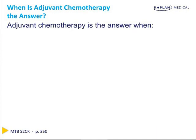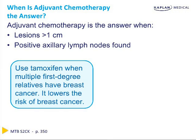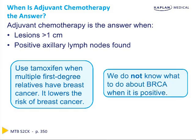Indications for adjuvant chemotherapy after breast cancer surgery include tumors larger than one centimeter or the presence of cancer in the axillary lymph nodes. In addition to its role as an adjuvant hormonal agent, tamoxifen has been shown to reduce the risk of developing breast cancer and is sometimes given prophylactically to women with multiple first-degree relatives with the disease. The BRCA mutation remains controversial regarding what to do with positive results in terms of prevention or treatment, and it is unlikely to be a source of USMLE Step 2 questions.